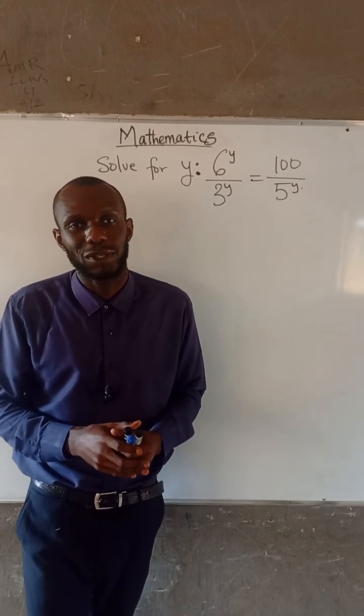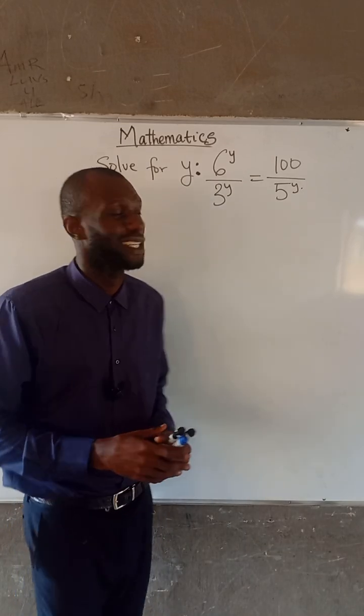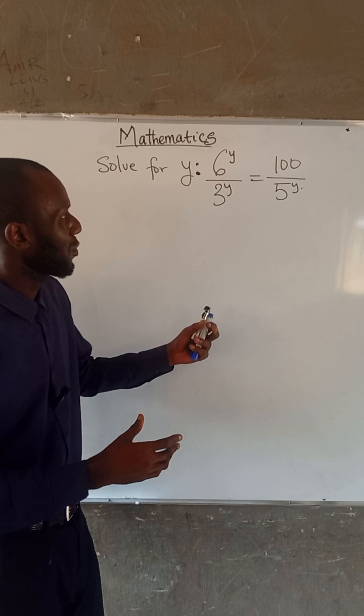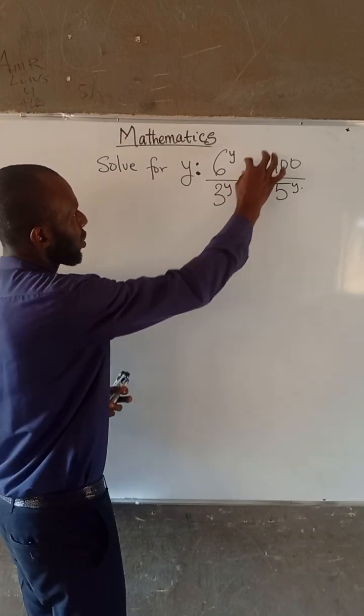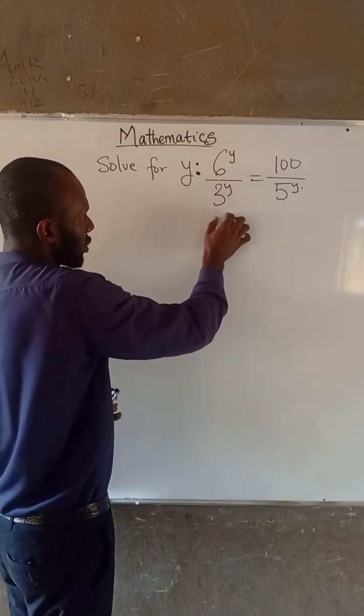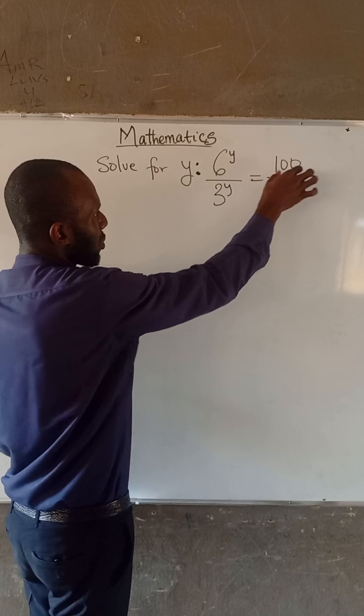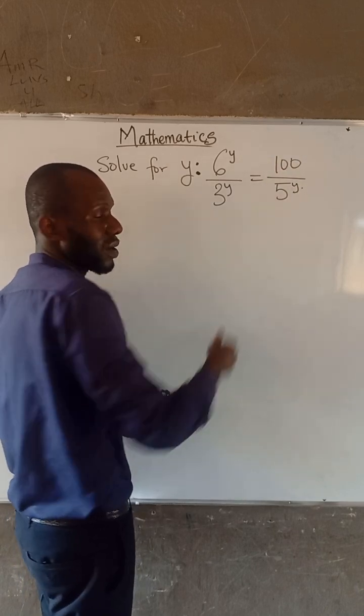Hello everyone, welcome to Radian Maths Academy. We are asked to solve Y, given that 6 to the power of Y divided by 3 to the power of Y is equal to 100 divided by 5 to the power of Y.